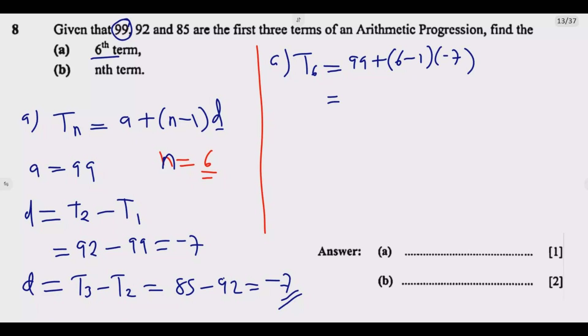So I'm going to have 99 plus 5 times negative 7. That's 99 minus 35, which equals 64. So 64 is the answer.